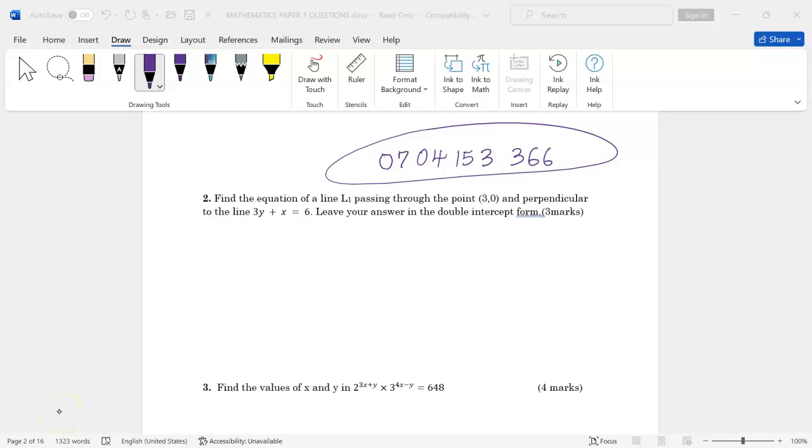Thank you for joining this lesson. We're going to discuss equations of straight lines and gradients. In number two, we are told to find the equation of line L1 passing through the point (3,0) and perpendicular to the line 3y + x = 6. Leave your answer in the double intercept form.